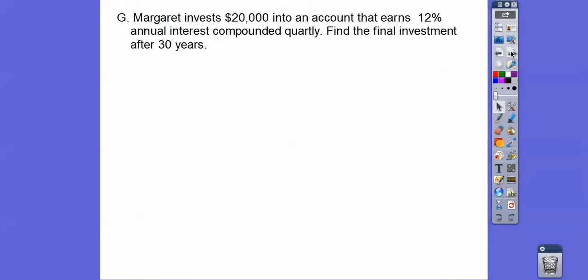So here we go. Margaret invests that $20,000 into an account that earns 12% annual interest compounded quarterly. Well, quarterly means four times a year. Find the investment after 30 years. We're going to go ahead and plug that in. So the time is 30 years. I'm sorry. N was the number of times it gets invested. Did I say T? I'm sorry. It's N. So anyway,